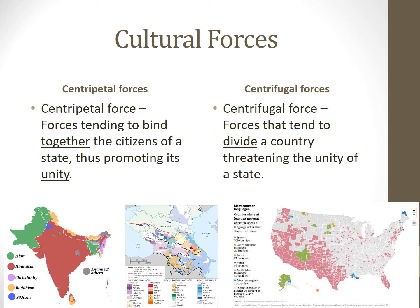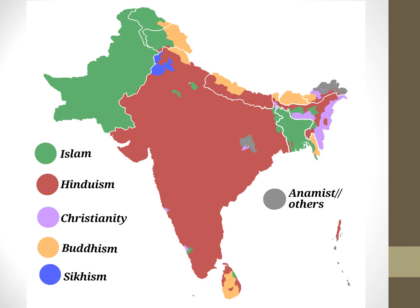On the other hand, cultural forces can divide as well. Many countries or regions do not speak just one language or practice a single religion. While Hinduism could be a unifying force for nearly 80% of India's population, Islam and Sikhism attract millions of adherents in India. In fact, over 160 million people in India are Muslim, making India the third largest Muslim country in the world, behind Indonesia and Pakistan. That has created conflict in the past when India gained independence from British colonial rule and when the modern countries of India, Pakistan, and Bangladesh were formed. It still remains contentious in the region of Kashmir, which both India and Pakistan claim, but has a large Muslim population and a Hindu minority.